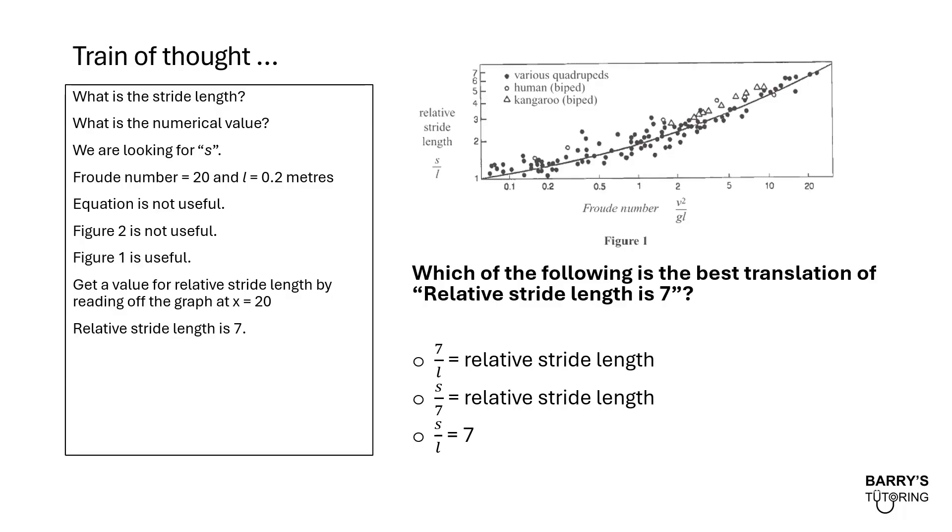Which of the following is the best translation of relative stride length is 7? Is it 7 on L is relative stride length, S on 7 is relative stride length, or S on L is equal to 7? What do you guys think? We're translating the words into math, essentially. S on L is equal to 7. That's the best translation, because relative stride length is S on L, according to the y-axis label. The word is can be translated to equals, and then 7. S on L is equal to 7, or relative stride length is 7.